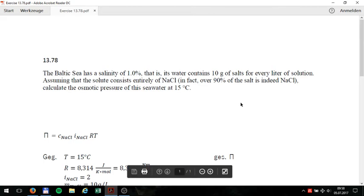The exact setting of the task is: the Baltic Sea has a salinity of 1%, that is, its water contains 10g of salt for every liter of solution. Assuming that the solute consists entirely of NaCl, in fact over 90% of the salt is indeed NaCl, calculate the osmotic pressure of this seawater at 15 degrees Celsius.